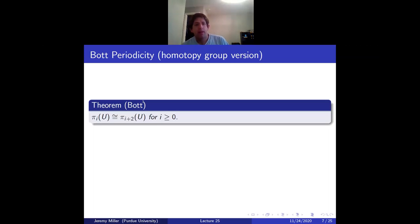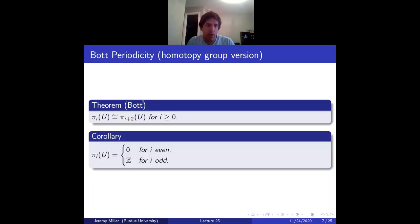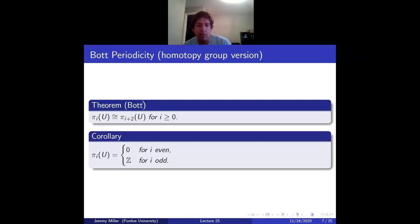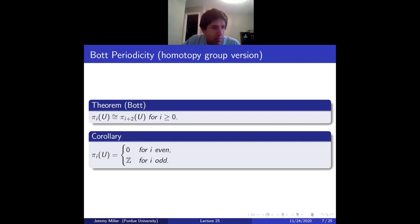Bott's theorem says that the homotopy groups of U are periodic: π_i(U) ≅ π_{i+2}(U). We know π₀ = 0 since all UN's are connected, and π₁ = ℤ since U1 is a circle and stability propagates this. So this periodicity theorem gives a complete calculation of all homotopy groups of U.